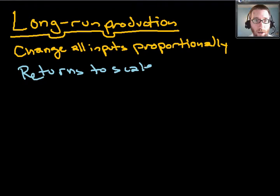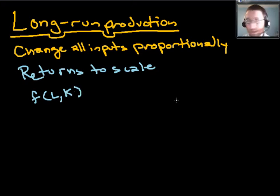So how do we do this? Well, in our model, it's pretty straightforward. We can double all our capital, we can double all our labor, and what we want to know is whether the output is going to increase in proportion to that, less than in proportion, or greater than in proportion. So, for example, let's say we have a production function, f of L, K.